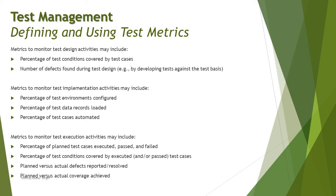Metrics to monitor test execution activities may include: percentage of planned test cases executed, passed, or failed; percentage of test conditions covered by executed test cases; planned versus actual defects reported and resolved; and planned versus actual coverage achieved. These factors span different dimensions but can all be measured during test execution. We must ensure the right set of metrics is available at the right time.